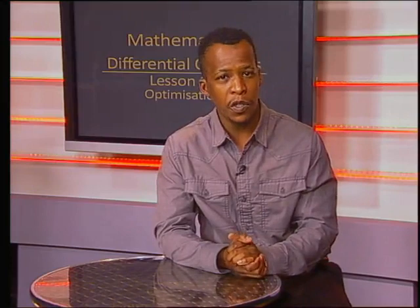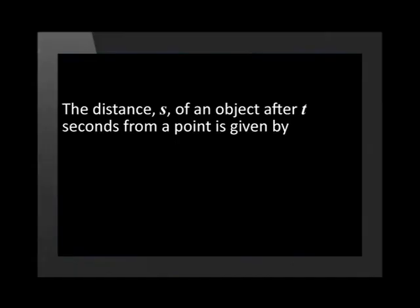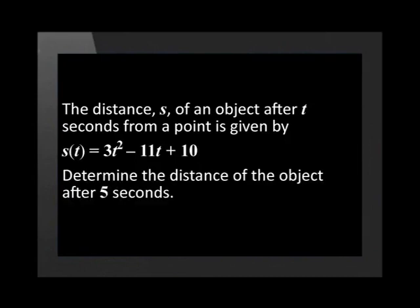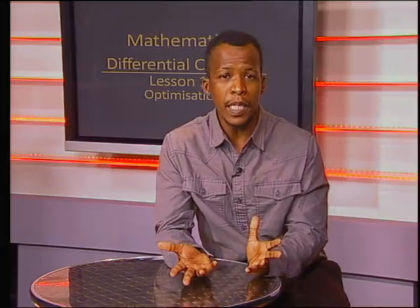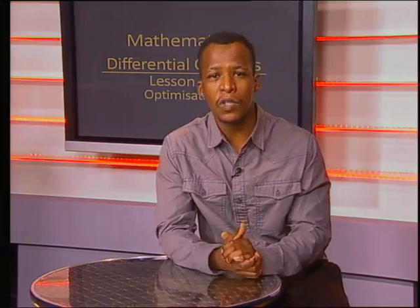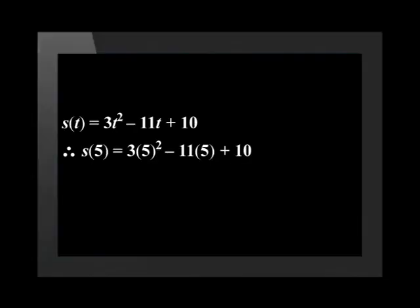Well, that wasn't too bad. Now let's try a different type of question — this one deals with calculus in motion. The distance s of an object in meters after t seconds is given by s(t) equals 3t squared minus 11t plus 10. Determine the distance of the object after 5 seconds. All we need to do is substitute 5 in for t: s(5) equals 3 times 5 squared minus 11 times 5 plus 10, which gives us a distance of 30 meters.